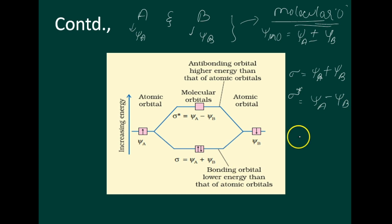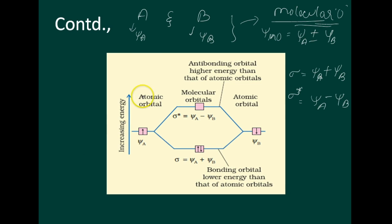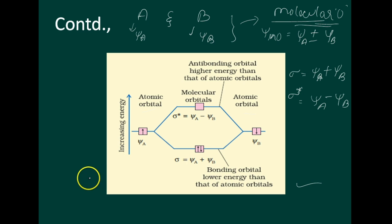So, ψ_A + ψ_B gives σ (bonding molecular orbital) and ψ_A − ψ_B gives σ* (antibonding molecular orbital). As shown in the figure, the bonding orbital has lower energy than the atomic orbitals, and the antibonding orbital has higher energy than the atomic orbitals. This completes the formation of molecular orbitals by the linear combination of atomic orbitals.